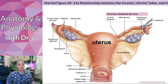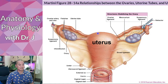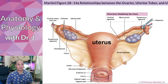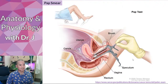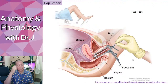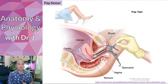The uterus is connected to the fallopian tubes and ovaries and is not free-floating in the pelvic cavity. It is firmly anchored and held in place by a series of ligaments that also help hold the ovaries.